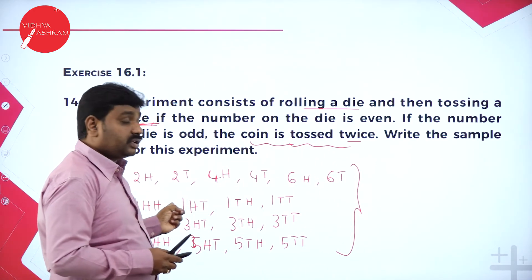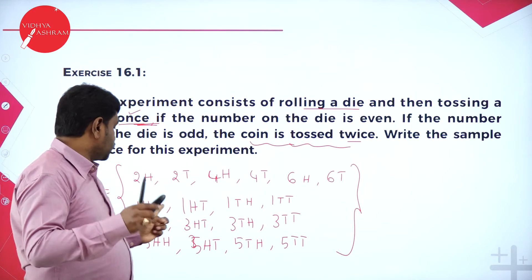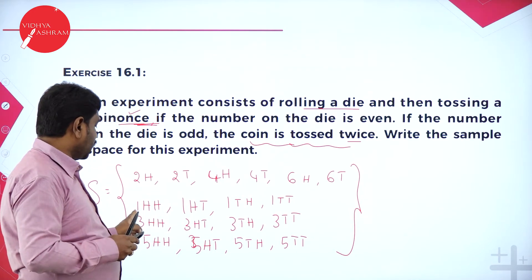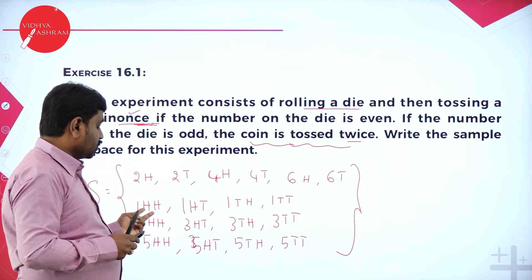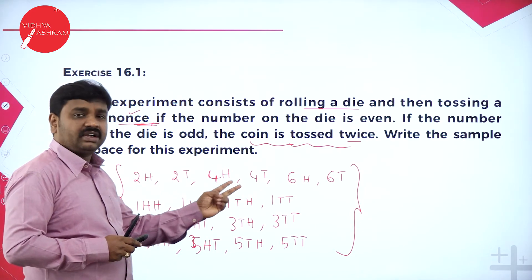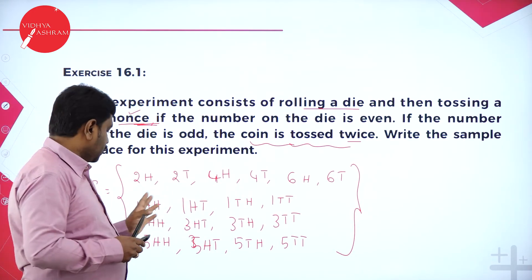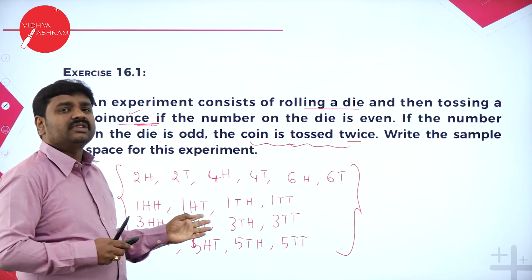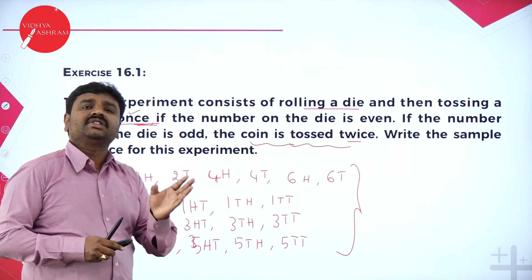If you get odd number 3 and toss twice: 3HH, 3HT, 3TH, 3TT. Or if you roll odd number 5, toss twice: 5HH, 5HT, 5TH, 5TT. These are all the possible outcomes.